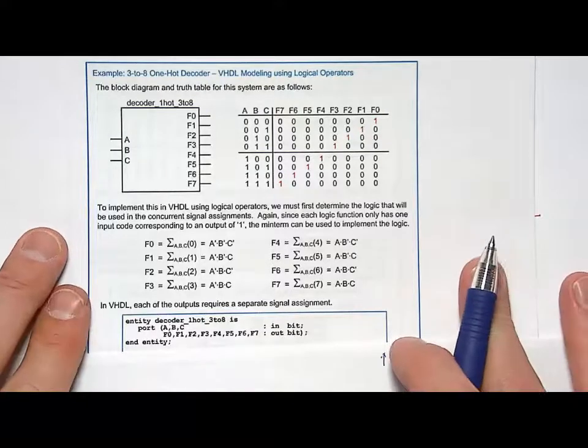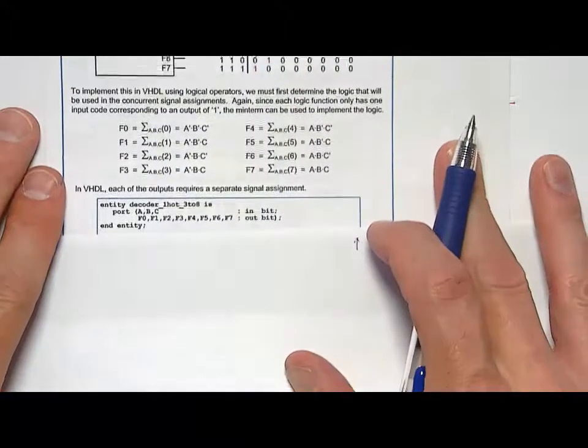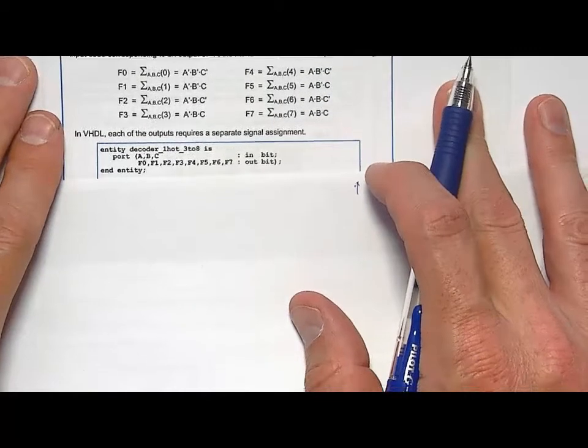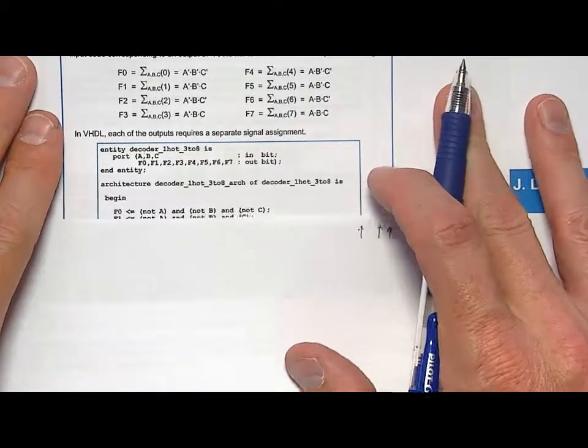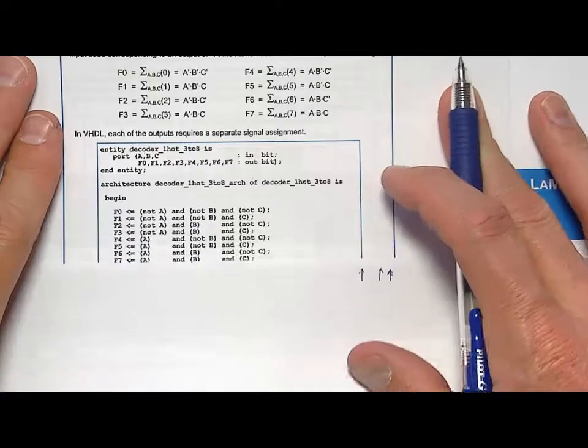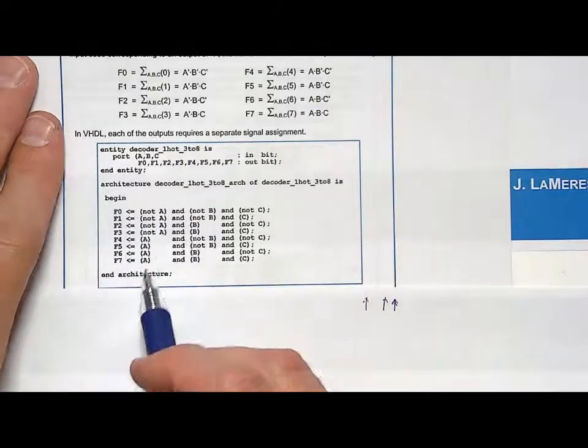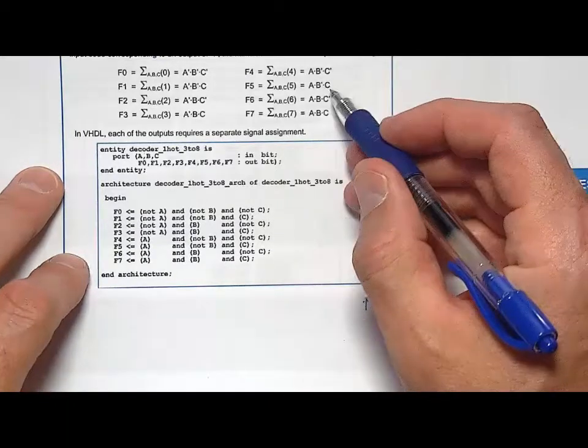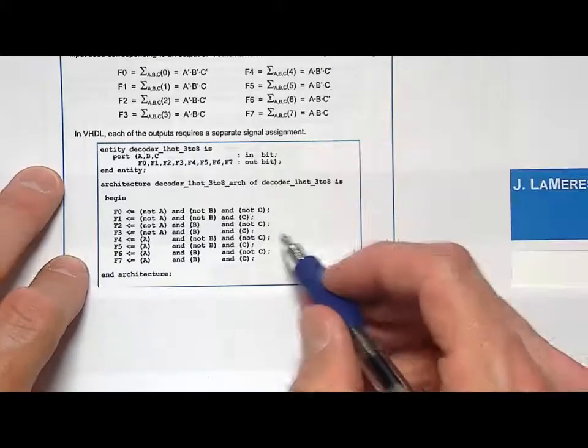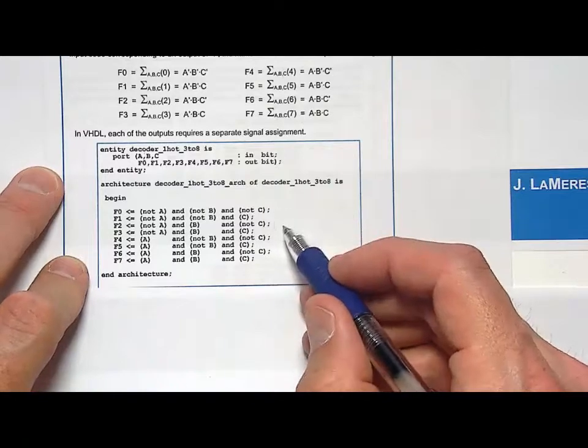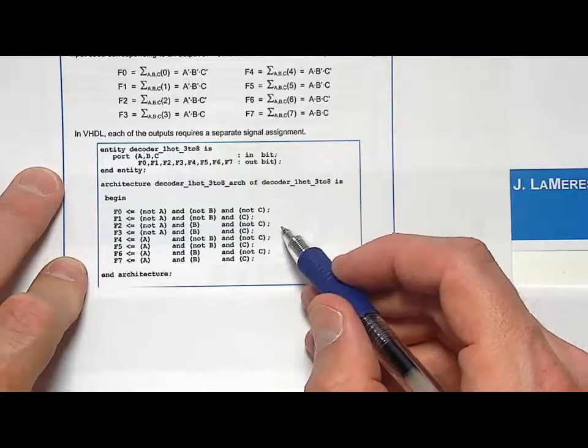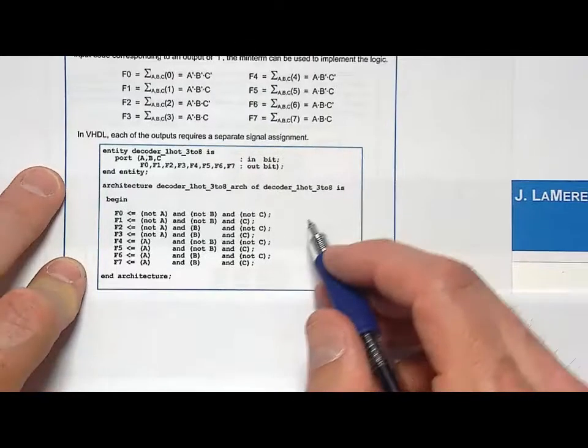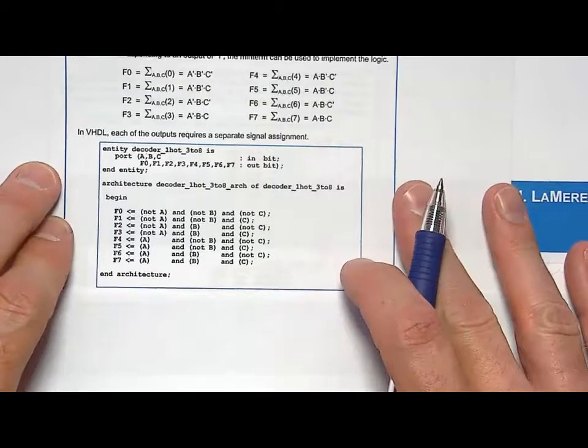And then what we're going to do here is now that we have our logic expressions, I can look at the architecture of this to model the behavior. So I'm going to have an architecture and then I'm going to begin and I'm just simply going to do 8 concurrent signal assignments with logical operators that represent these 8 logic expressions. So this is nothing more, this is almost exactly like a text based schematic of the classical digital design approach. It's still probably easier to do it this way than it would be by hand and wired up. But this just shows how you would get started using VHDL to do this.